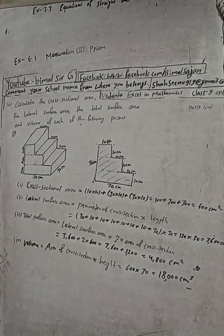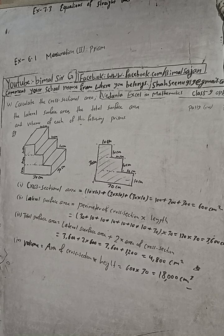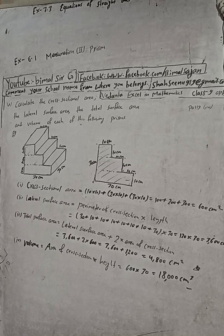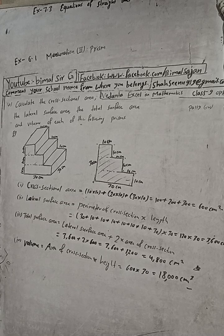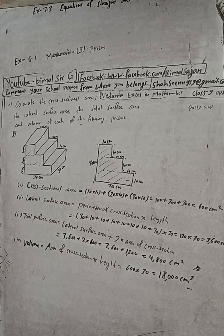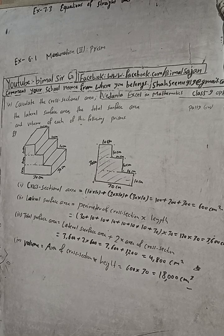So dear subscribers, viewers and students, this is the solution of 4F. The full solution is here. The lateral surface area is 3,600, the total surface area is 4,800 (with the print mistake noted), and the volume is 18,000 cm³. We used the area of cross-section throughout.